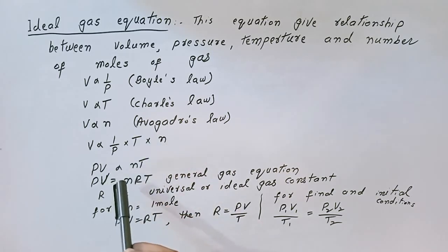When we remove the proportionality sign, we write PV is equal to nRT. R is universal or ideal gas constant.